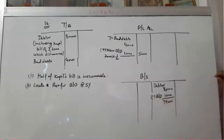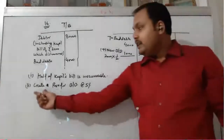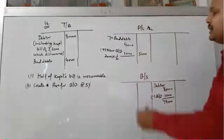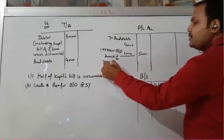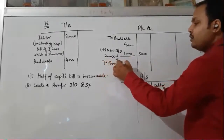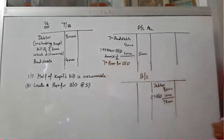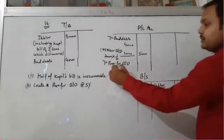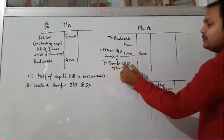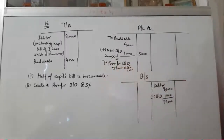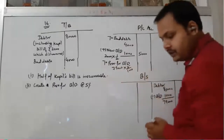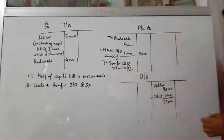The second adjustment is to create a provision for bad debts, which will be shown on the debit side of the P&L account. The provision is calculated on ₹79,000 — wait — the provision for bad debts is to be calculated on ₹78,000. This requires careful attention. The provision at 5% on ₹78,000 gives approximately ₹3,900.